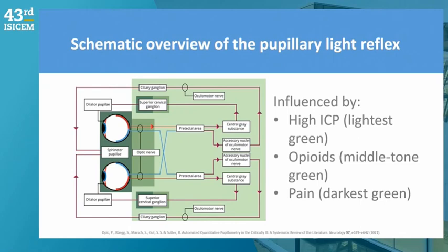We're looking for the relationship between some structures — the cranial nerves, the optic cranial nerve, the third cranial nerve — and some structures of the brainstem and their functionality. There are elements that could influence the response of the pupils: elevated ICP could compress the brainstem, opioids could give the pupil a smaller size, and pain on the other side could produce a larger pupil.